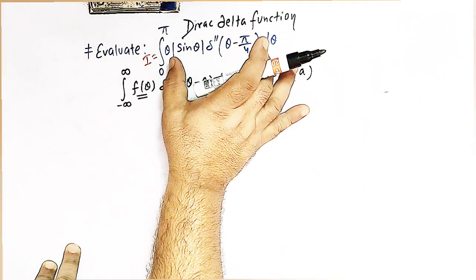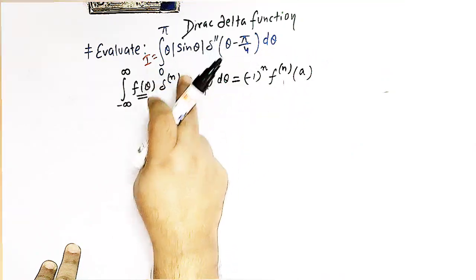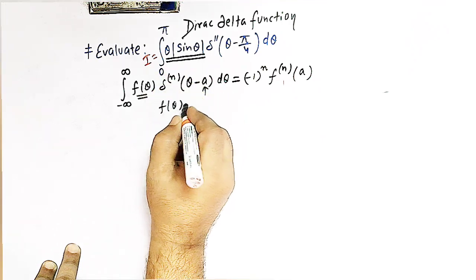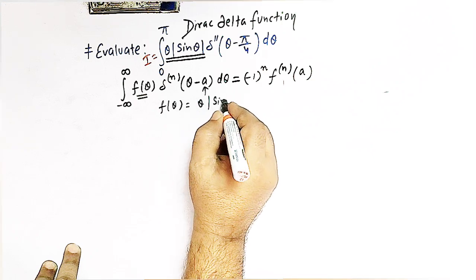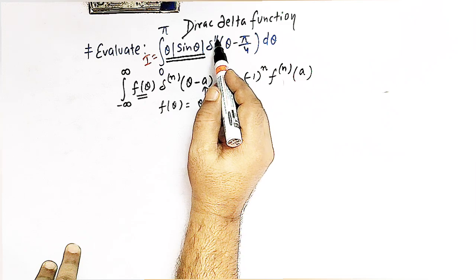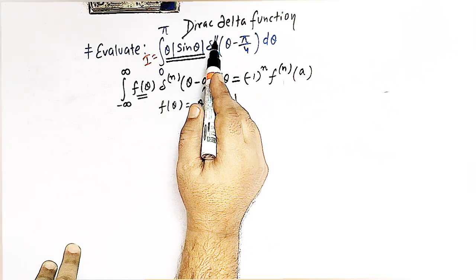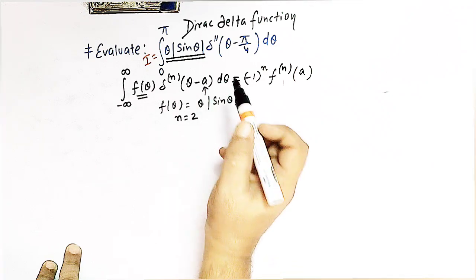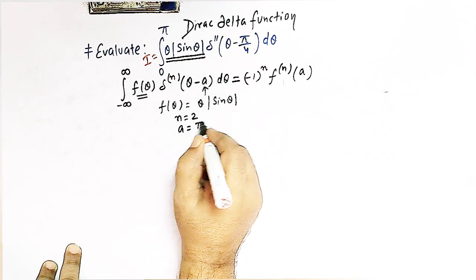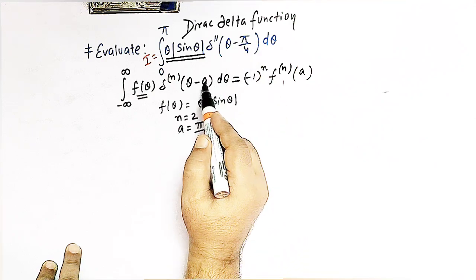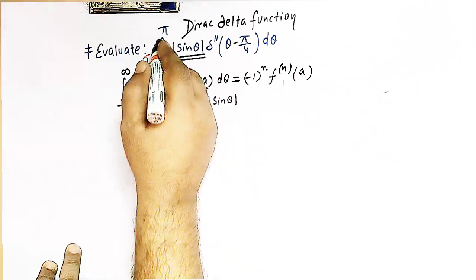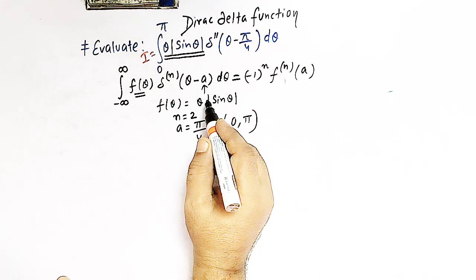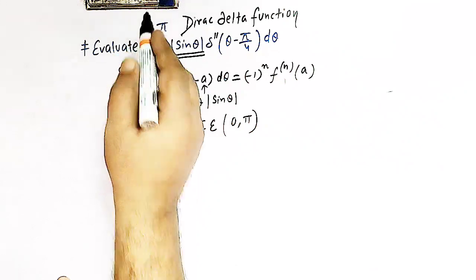Comparing our integral with this property, f(θ) is θ times the absolute value of sin θ, and we have the second derivative, so n = 2 and a = π/4. This point a = π/4 belongs to the interval [0, π].